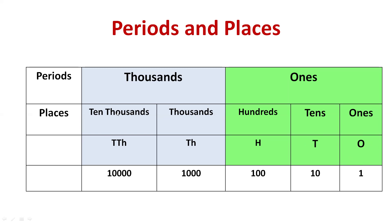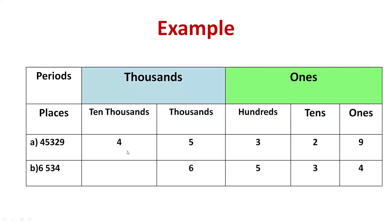So this way we have done the places and periods. We have two periods: the ones period and the thousands period, and under each period we have places. Now we'll take an example. We have a number here which is 4, 5, 3, 2, 9, and we have to write this number under the place value chart.